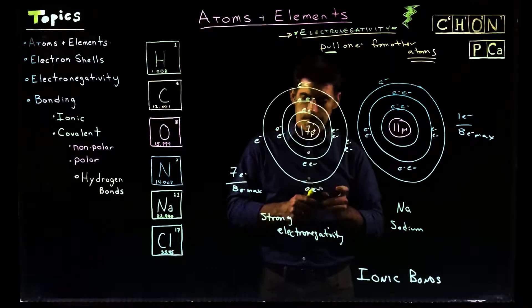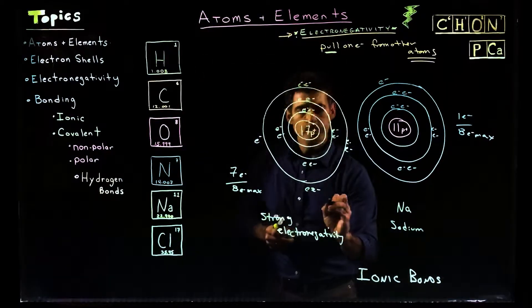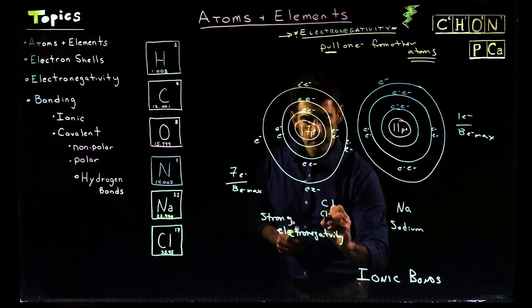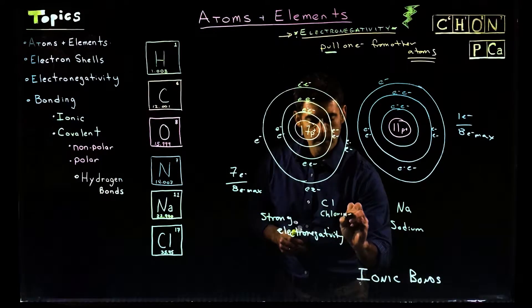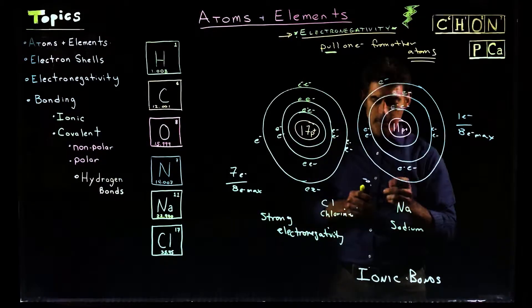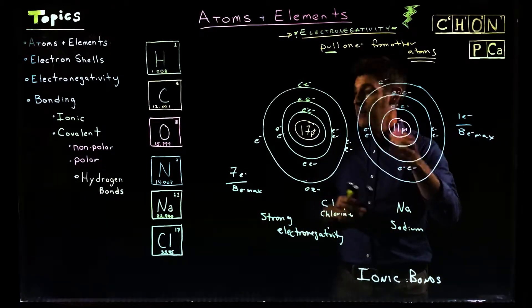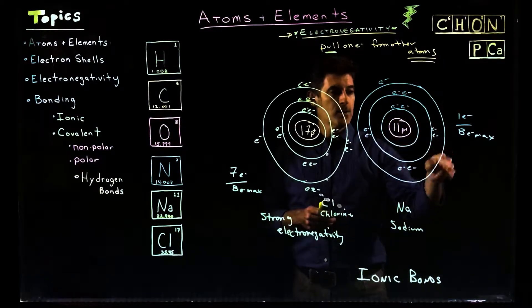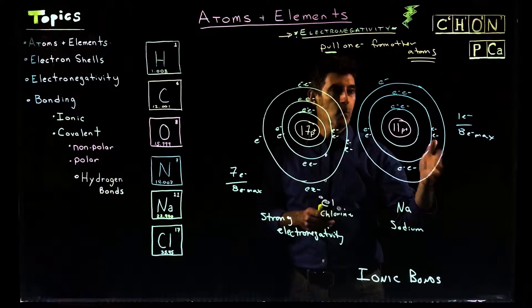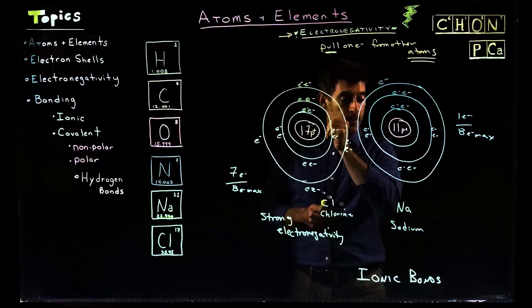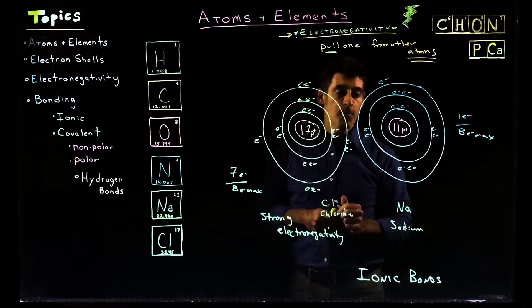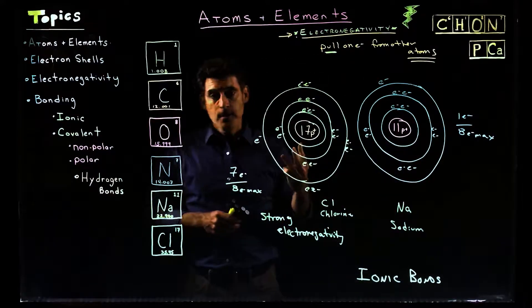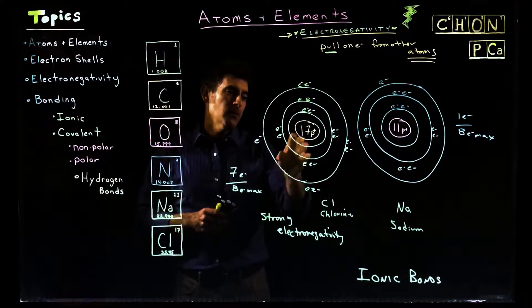How about sodium? So we'll put the Cl for chlorine over here so we don't forget it. This is chlorine. So now sodium over here, well, 11, that's a lot of protons. But the outer shell, not good at all. 1 out of 8. So not close at all to being full.